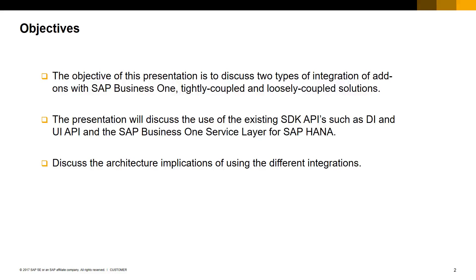The main objectives of this presentation will be to discuss the implications of two types of SAP Business One integrations, namely tightly coupled and loosely coupled solutions. In relation to the two integration options, we will discuss the overall architecture of the SAP Business One SDKs as well as the service layer and the use of SAP Cloud Platform in relation to extensibility.